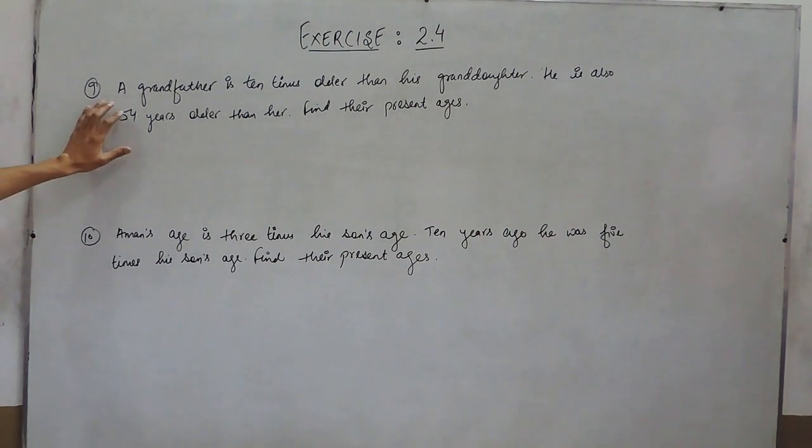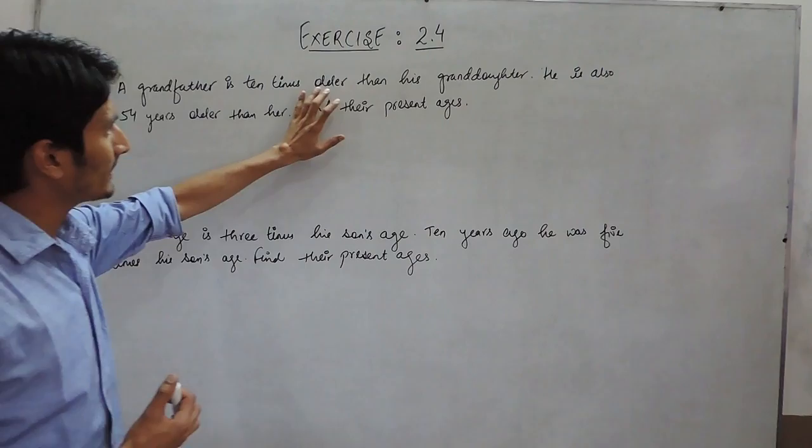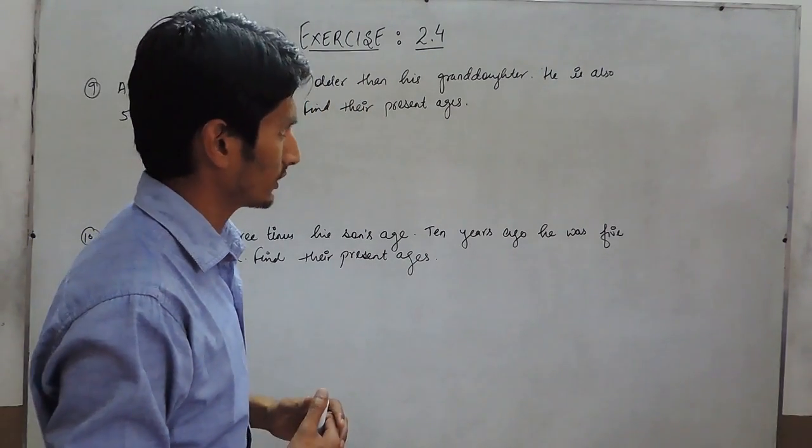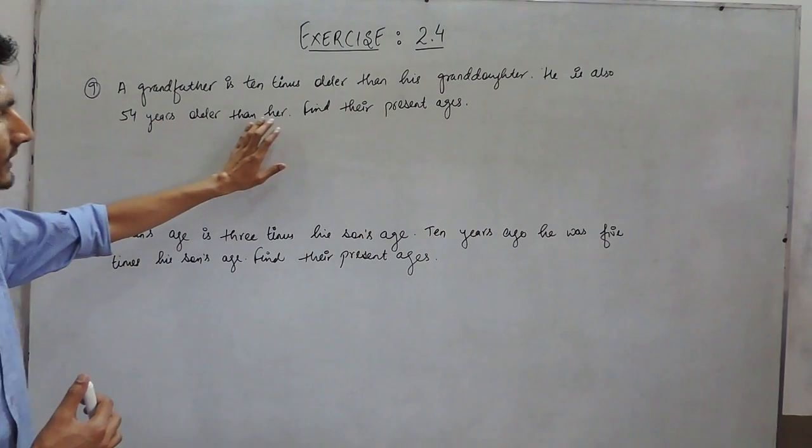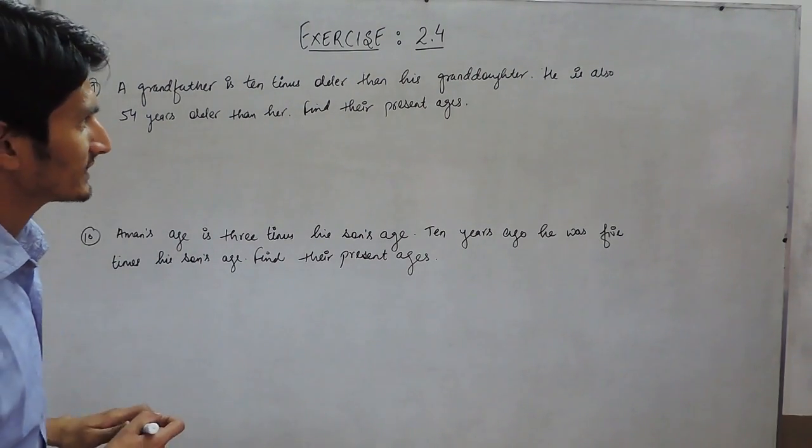In question number 9, a grandfather is 10 times older than his granddaughter. He is also 54 years older than her. Find their present age.